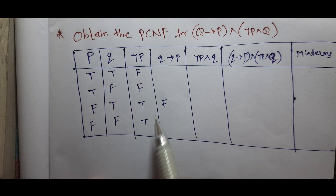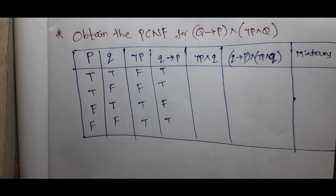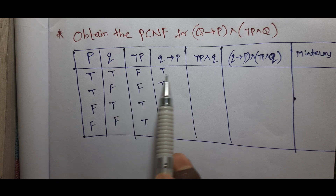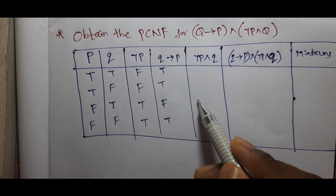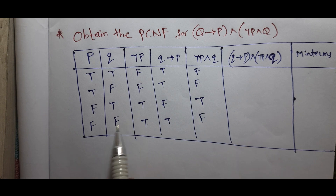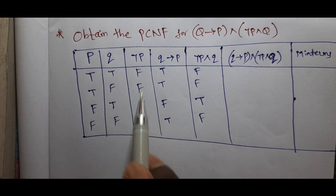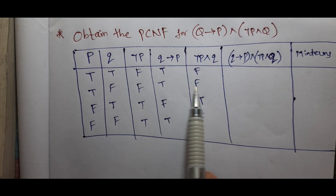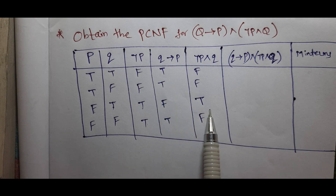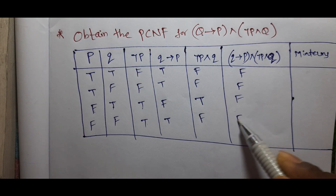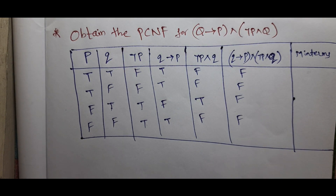For the first statement true, false — the remaining values are true. Any two statements true, remaining false. True, true. False, true and false. And false — remaining false.